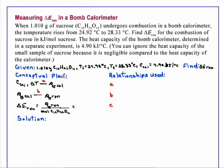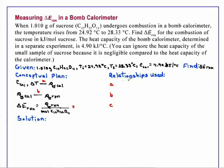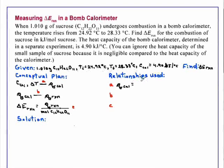There are three steps to the conceptual plan. In the first step, we will use the heat capacity and the temperature change to calculate the heat absorbed by the calorimeter using the relationship that Q of the calorimeter is equal to C cal times the change in temperature, delta T.